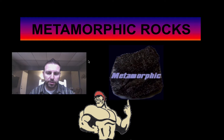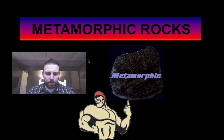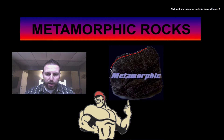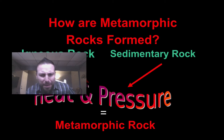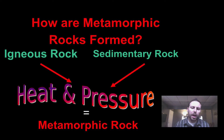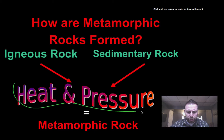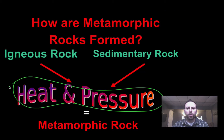Hello ladies and gentlemen, welcome back to another screencast by your earth science teacher Mr. Stano. Today we're going to head into metamorphic rocks. On this diagram we have a picture of what appears to be a metamorphic rock. Metamorphic rocks are formed differently than igneous rocks and sedimentary rocks — they need heat and pressure to form. That pressure is used to press and change sedimentary and igneous rock into metamorphic rock.